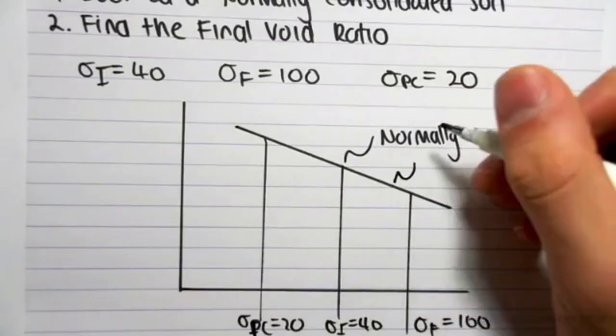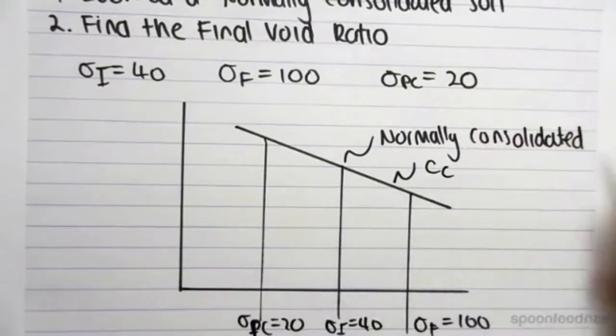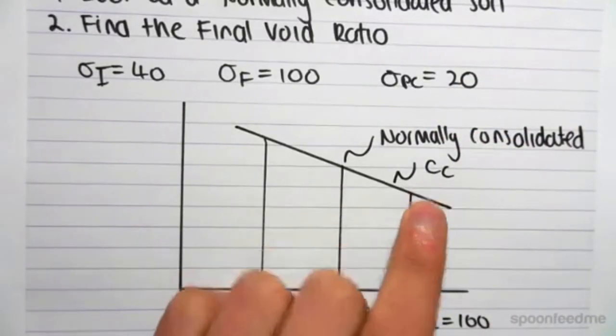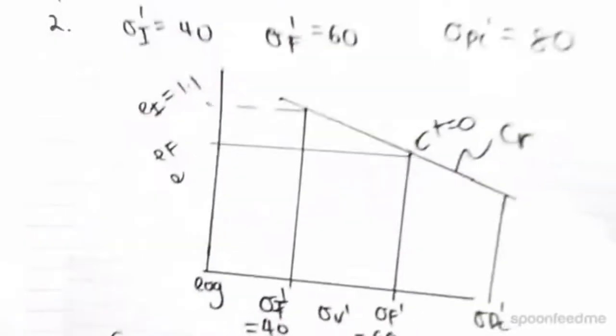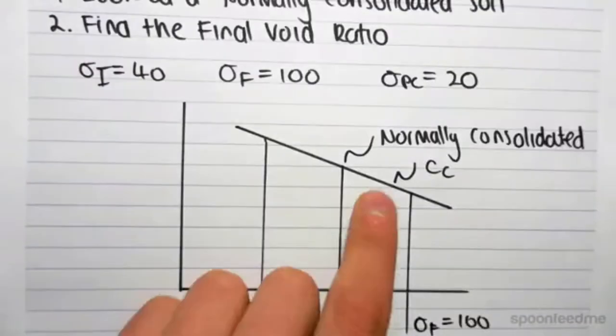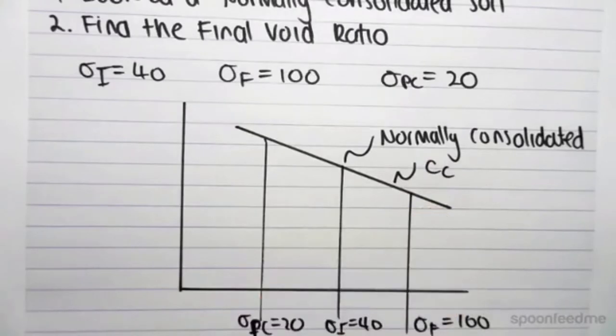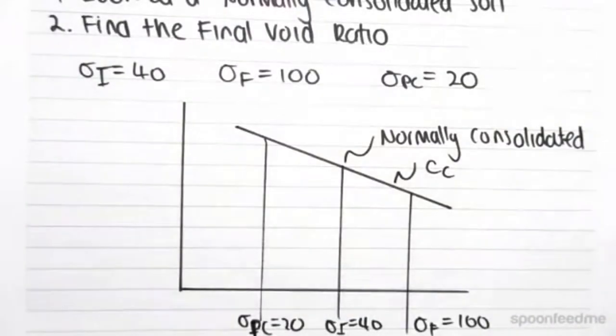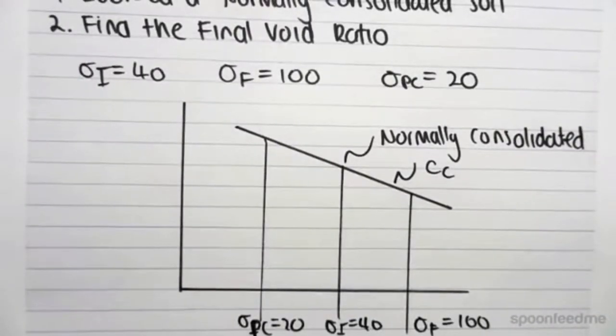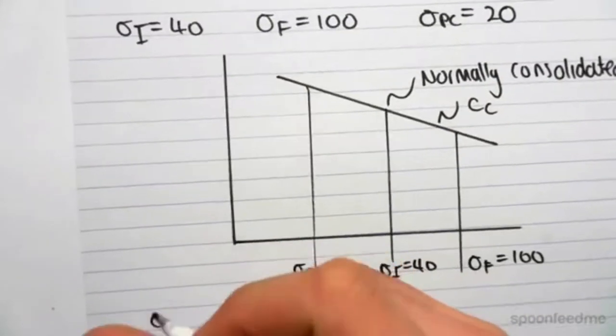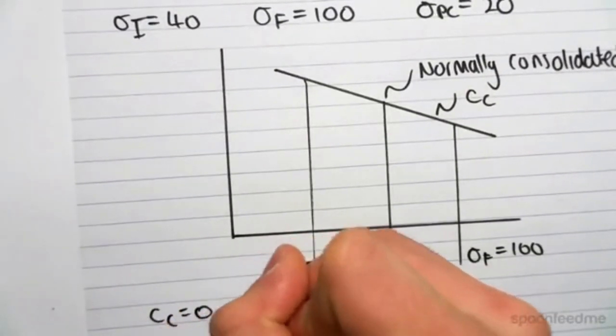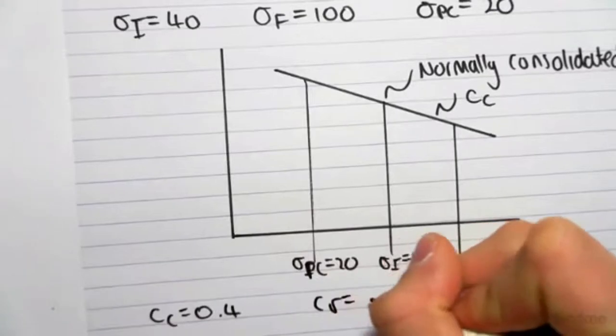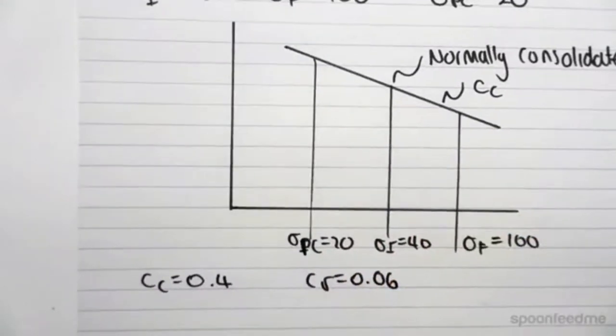we need to know to use cc, the compression index. In the previous video, we used cr, but because our soil is normally consolidated, we need to use cc. And to find the final void ratio, it's the exact same process. So let's just make up an example: cc equals 0.4, cr equals 0.06.